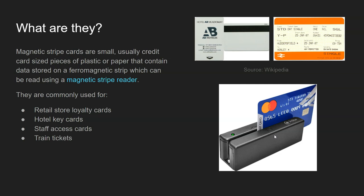They're common in retail store loyalty cards — when you go shopping and they ask if you've got a loyalty card, you just swipe your card. Same thing goes for hotel key cards; they'll encode a key card with the correct passcode that matches the door to that room. Also staff access cards can be encoded in exactly the same way, and they're really common on train tickets so the conductor can swipe the ticket to check it's genuine.